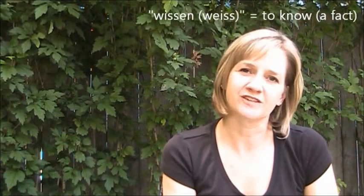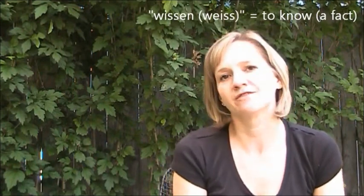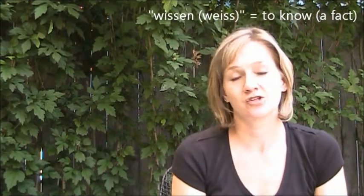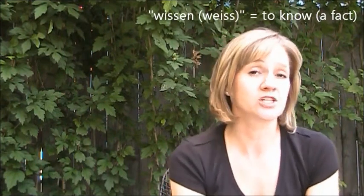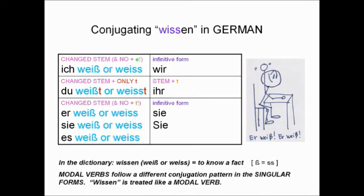This is the verb wissen and it means to know a fact. Check out these conjugations: ich weiß, du weißt, er weiß, wir wissen, ihr wisst, sie wissen.